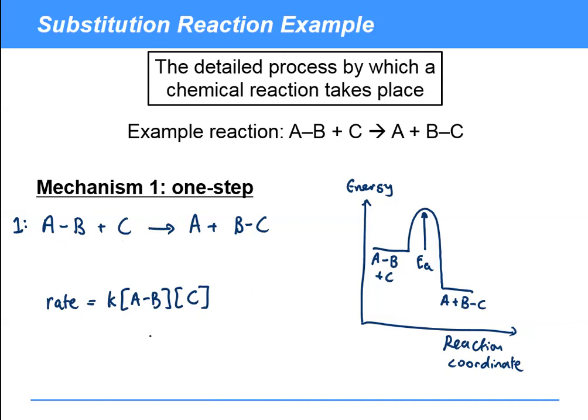If either of these goes down, then we'll expect the rate to go down, and because they're reacting one to one, they're both going to affect the rate equally.